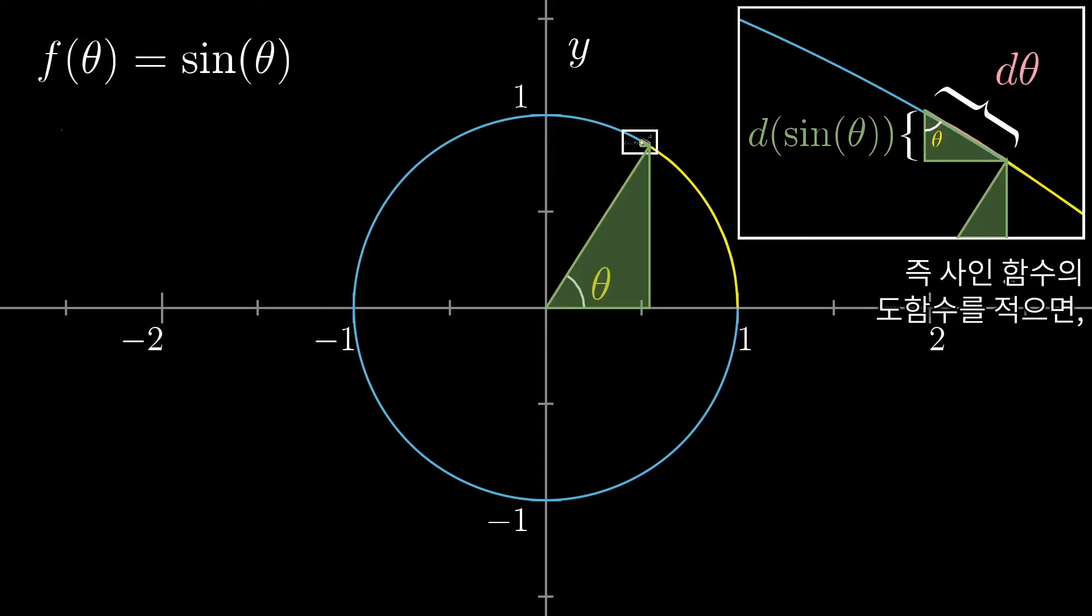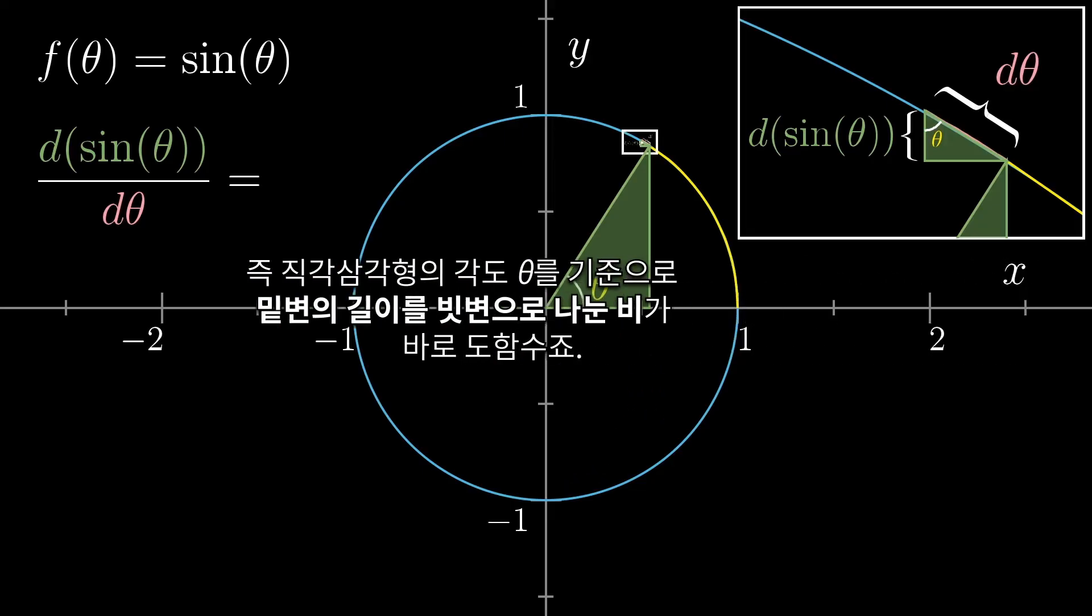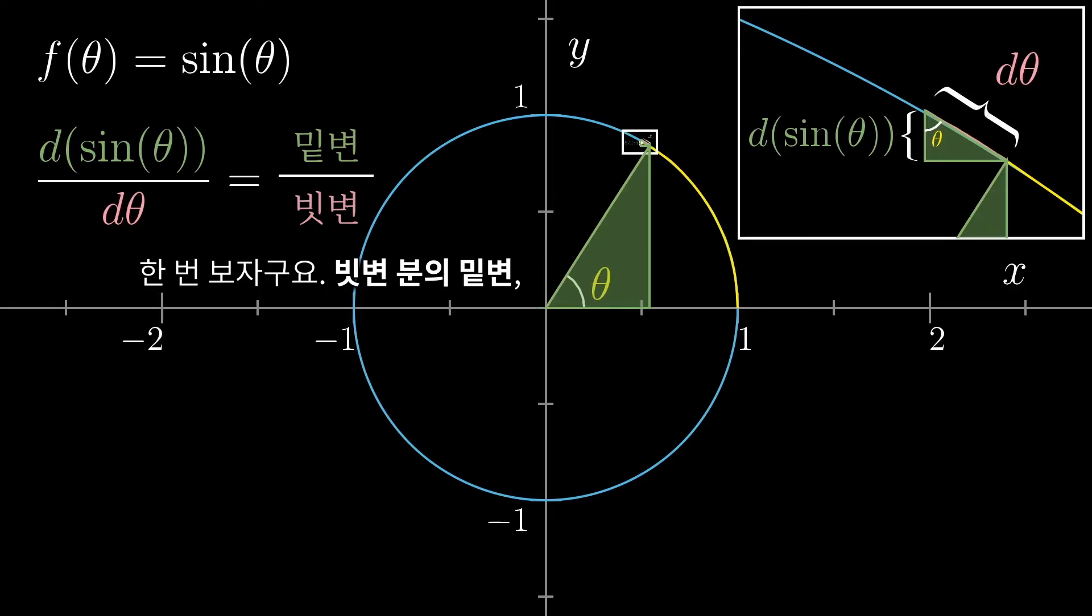Now think about what the derivative of sine is supposed to mean. It's the ratio between that d sine of theta, the tiny change to the height, divided by d theta, the tiny change to the input of the function. And from the picture, we can see that that's the ratio between the length of the side adjacent to the angle theta, divided by the hypotenuse. Well, let's see, adjacent divided by hypotenuse? That's exactly what the cosine of theta means. That's the definition of the cosine.